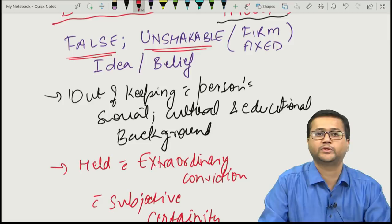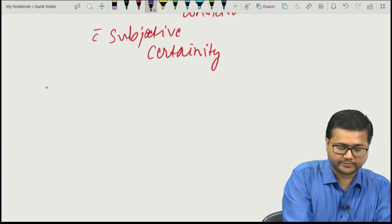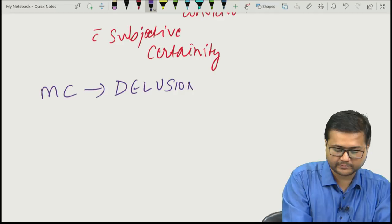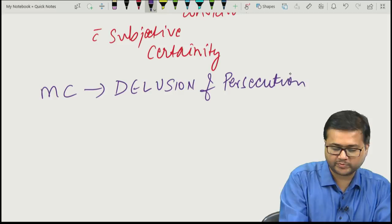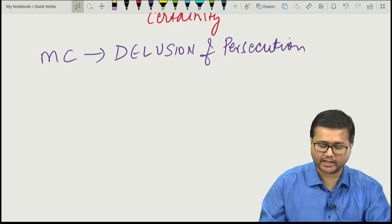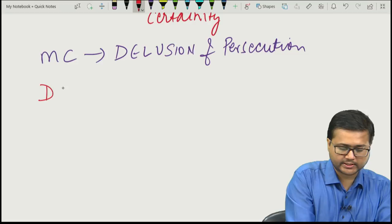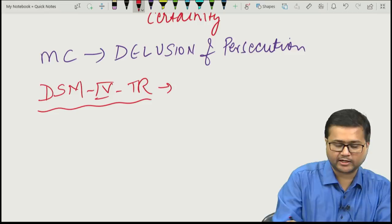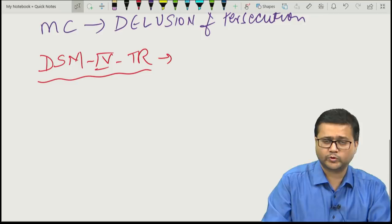So delusion is a false and unshakable idea or belief — important to remember. The most common delusion is delusion of persecution. The concept of bizarre and non-bizarre was described in DSM-4 TR, but this concept has now been removed from DSM-5.